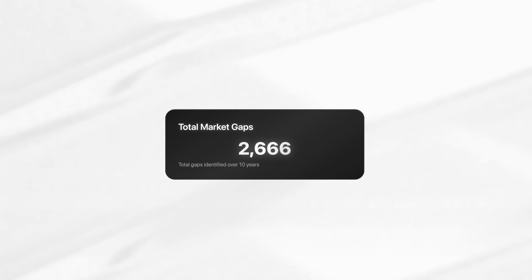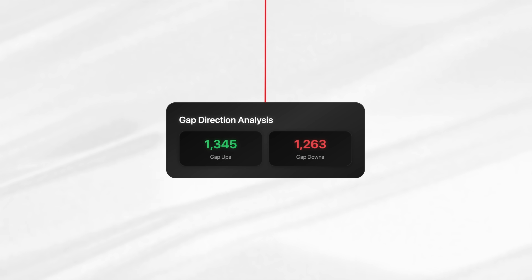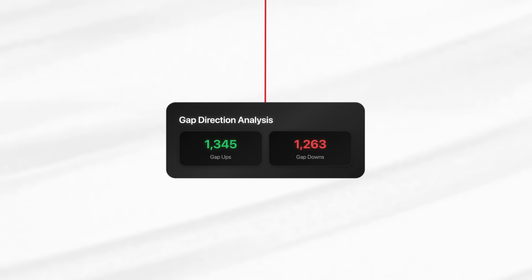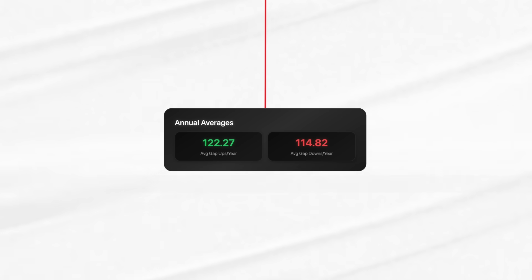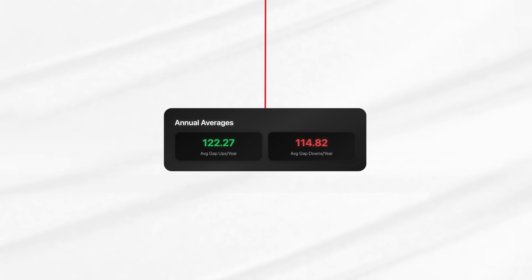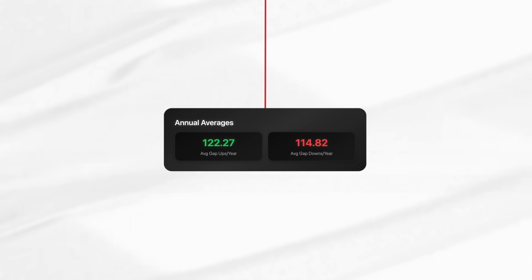So I took these steps and formatted my study. We pulled the last 10 years of NASDAQ futures data, and here's what we found. There were 2,666 gaps. Of those, there were 1,345 gap ups and 1,263 gap downs. Average gap ups per year were about 123, and average gap downs per year was about 115. Clearly, the direction of the gap doesn't matter a whole lot.